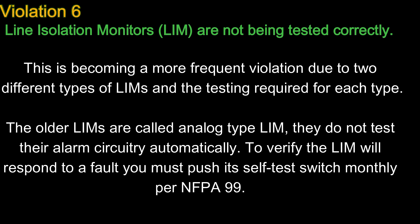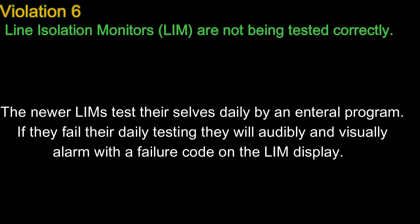Number 6: Line isolation monitors (LIMs) are not being tested correctly. This is becoming a more frequent violation due to two different types of LIMs and the testing required for each type. The older LIMs are called analog type — they do not test their alarm circuitry automatically. To verify the LIM will respond to a fault, you must push its self-test switch monthly per NFPA 99. The newer LIMs test their cells daily by an internal program. If they fail their daily testing, they will audibly and visually alarm with a failure code on the LIM display.